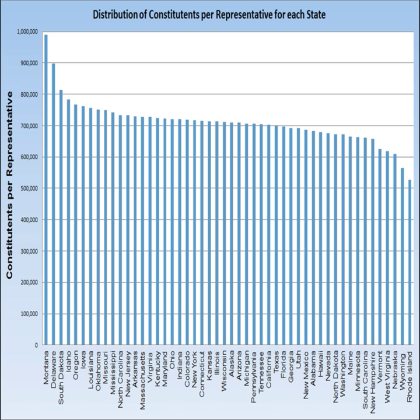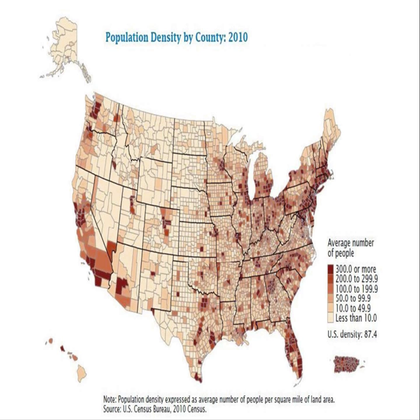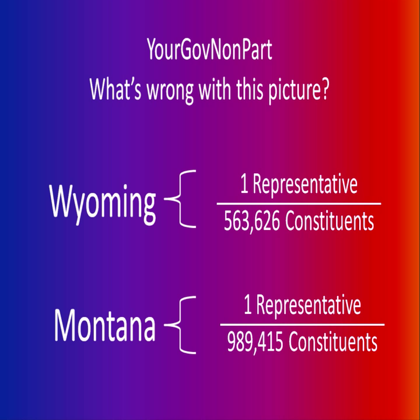If we look at the distribution of representation in the House across the country, we see that some states, such as Montana, have huge numbers of constituents for their single representative, while other states, such as Wyoming, have much smaller numbers. A distribution map of the population makes that clearly evident. Montana and Wyoming, which are neighbors, are the worst-case scenario — one representative for nearly twice as many people in Montana as in Wyoming, meaning Wyoming has about twice the representation in Congress and about twice the say in the Electoral College.